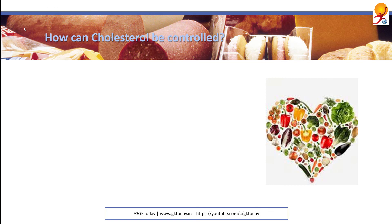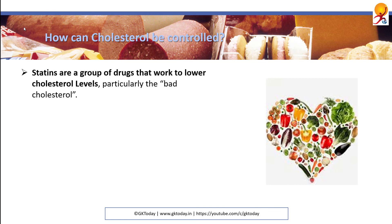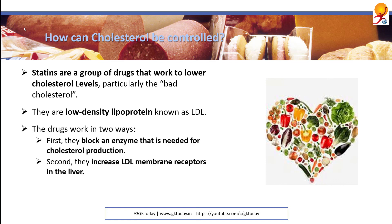How can cholesterol be controlled? Statins are a group of drugs that work to lower cholesterol levels, particularly the bad cholesterol, which is the low-density lipoprotein known as LDL. The drugs work in two ways: first, they block an enzyme that is needed for cholesterol production; second, they increase LDL membrane receptors in the liver.